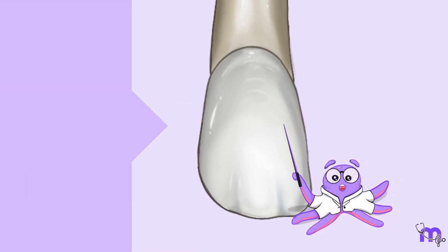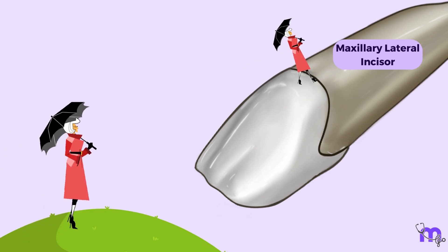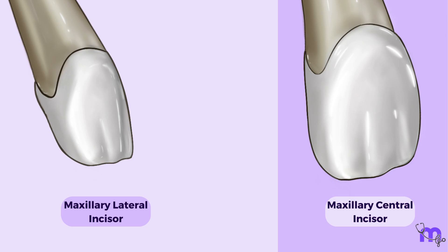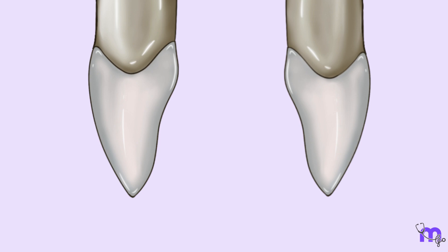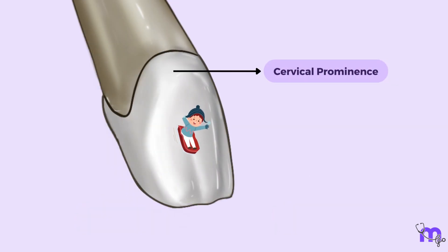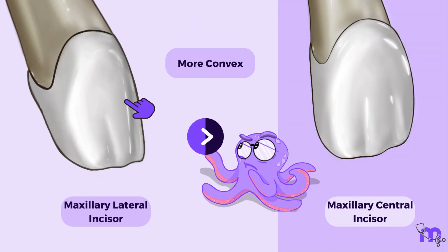Having learned the labial outline, let us also learn the labial surface characteristics. Walking on the labial surface would be like walking on a hillock, like the central incisor. It shows convexity at the cervical third, representing the labial crest of curvature, the outlines of which will be better seen from the mesial or distal aspect. From the cervical prominence to the incisal edge, it is a relatively flat surface, but slightly more convex than that seen in the maxillary central incisor.